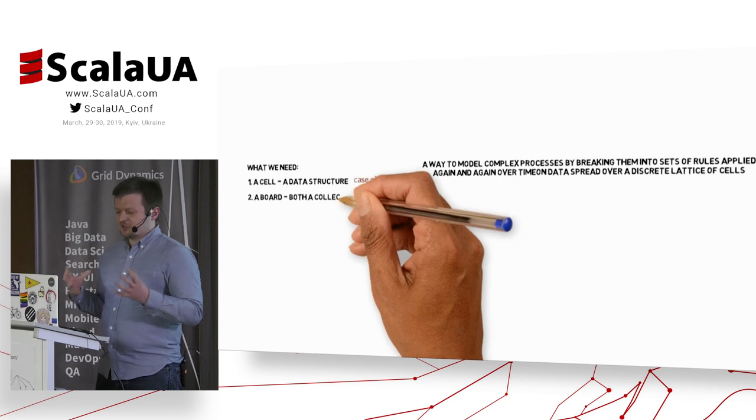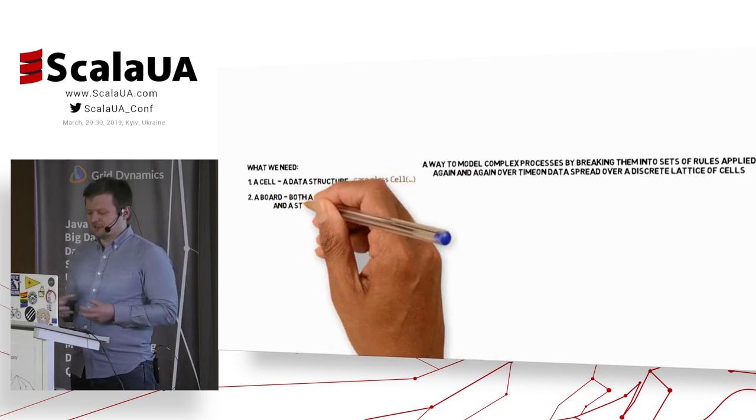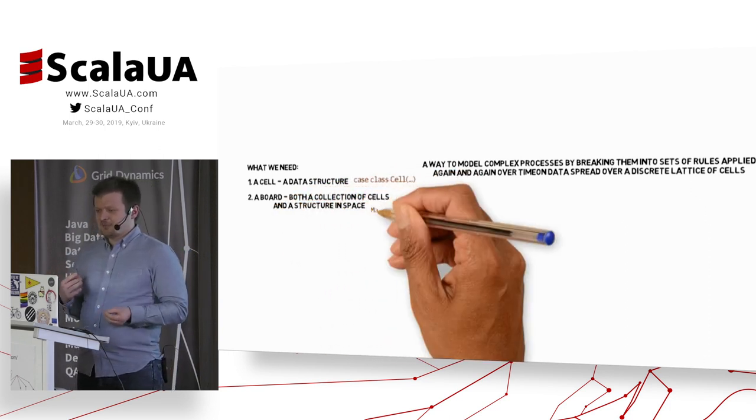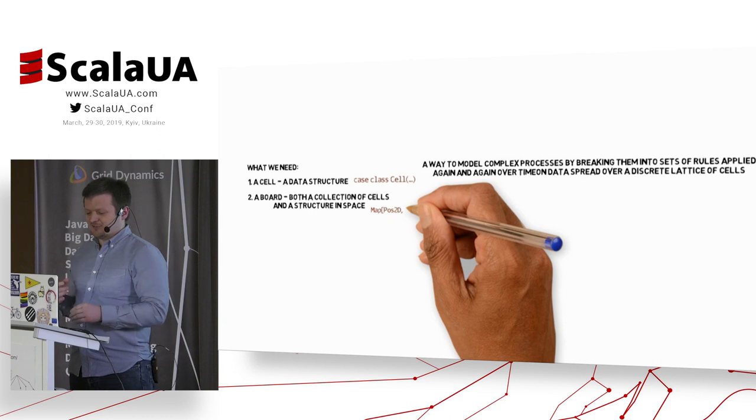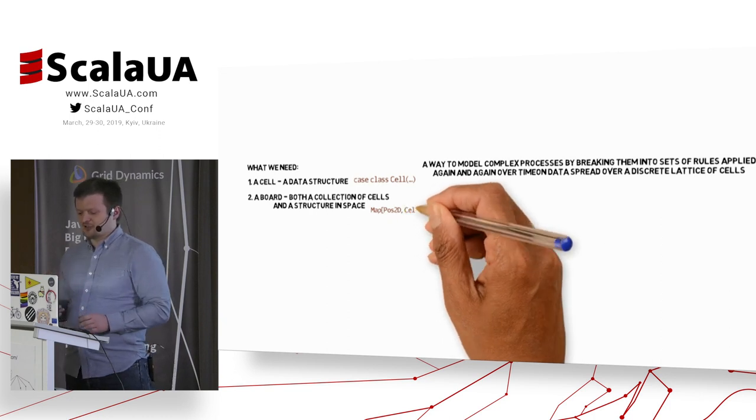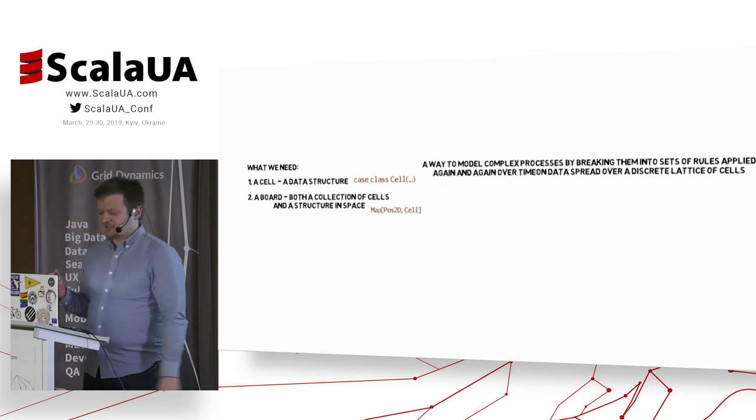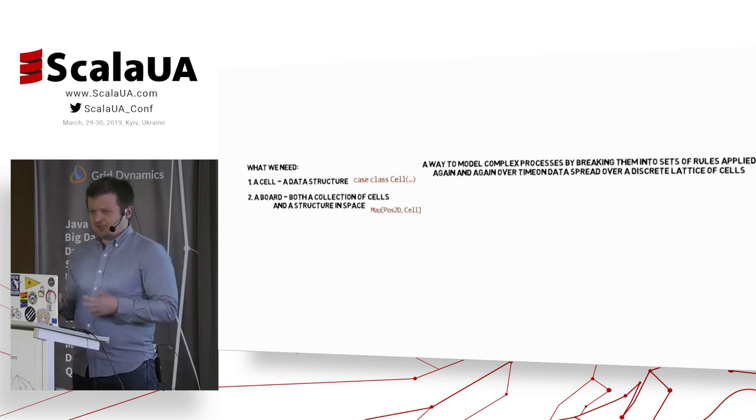Then we need a board of those cells. This board is both a collection of all the cells, but it also tells us something about the relations between cells in space. It can be two-dimensional or three-dimensional, and in Scala, it will be implemented as a map of positions to the cells themselves.